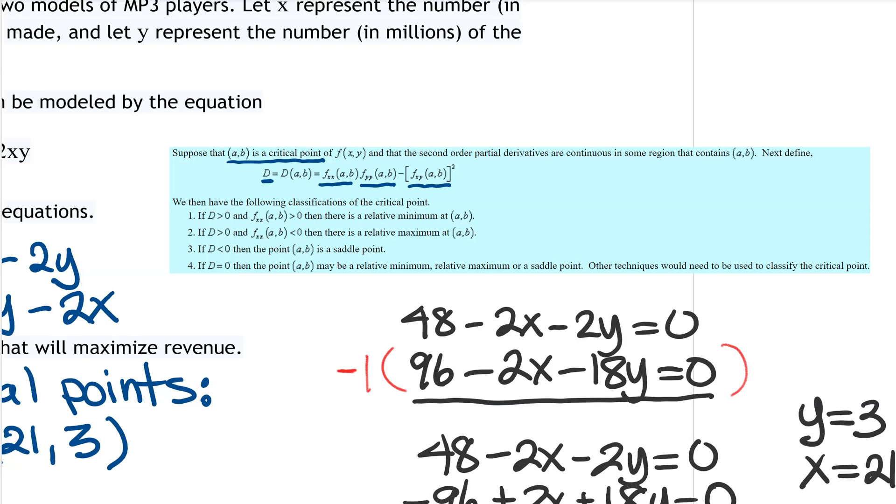And then once we have that value of D, we decide among these four options whether we have a minimum, a maximum, a saddle point, or something other.